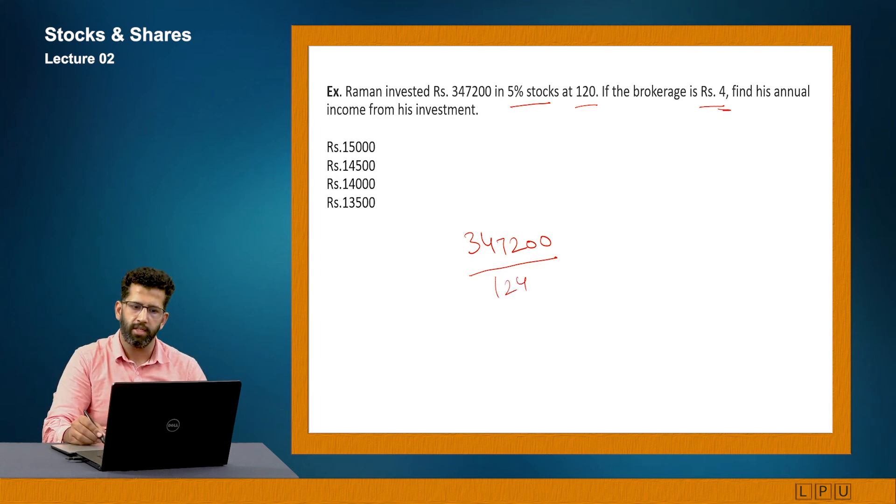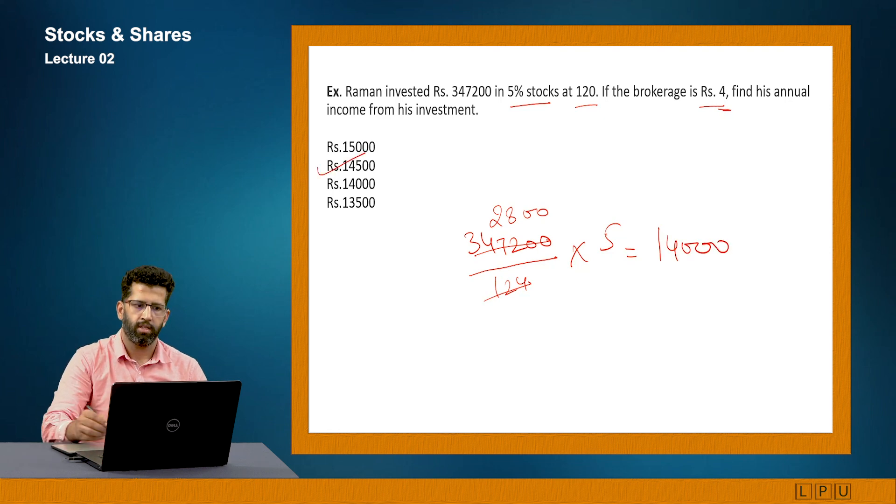This is the number of shares he has purchased, multiplied by he is getting 5% per share, so Rs 5. Because understand, it will be Rs 100 share, he is getting Rs 5 against each share. So when I will solve this, what I will get? If I solve this, I will get 2800 into 5 will give me Rs 14000. So my answer will be Rs 14000, not this one, but this one. I have to be very careful in this kind of situation because sometimes the figures are so similar that we tend to make the mistake. So the answer is C only.